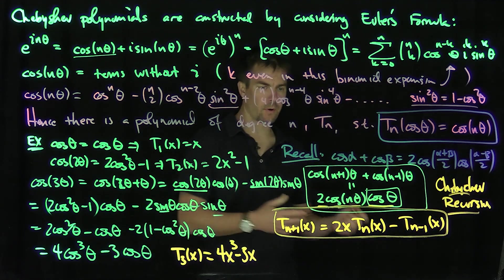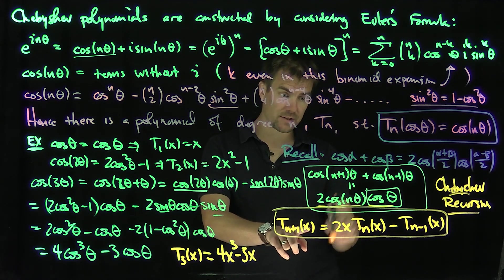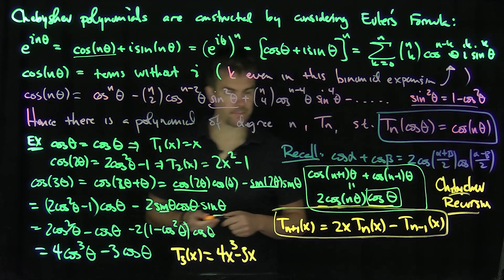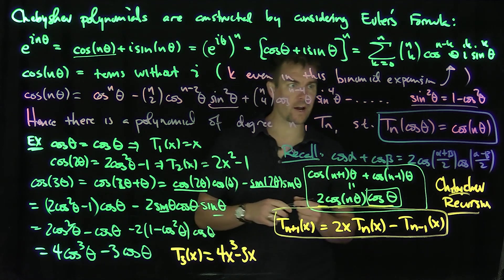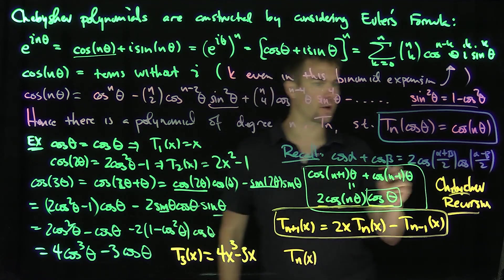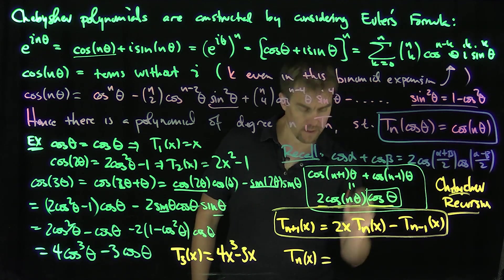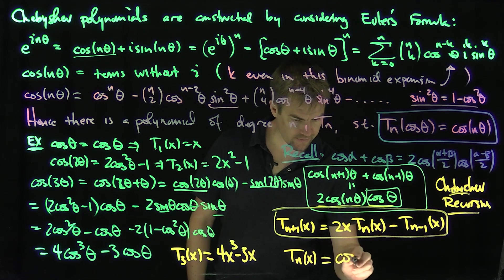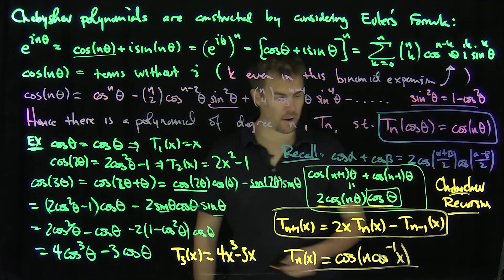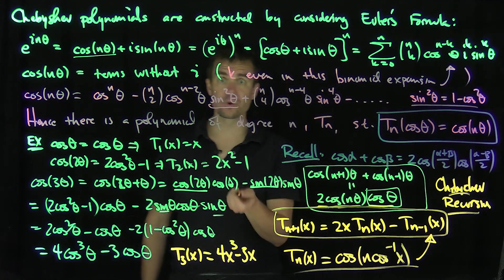As a consequence of the definition, since x = cosine(theta) means theta = arccos(x), we have T_n(x) = cos(n·arccos(x)). This is the trigonometric representation of the Chebyshev polynomials, but in practice we use the recursion relation to generate them.